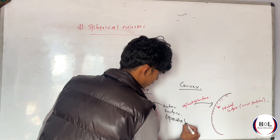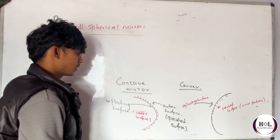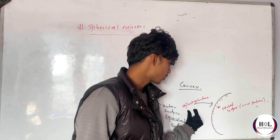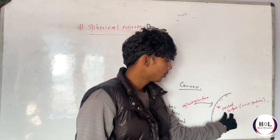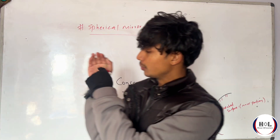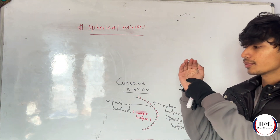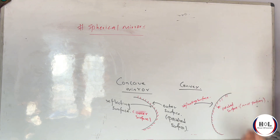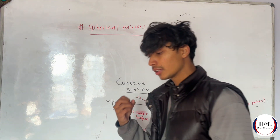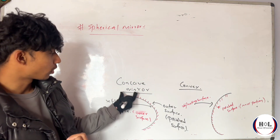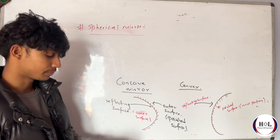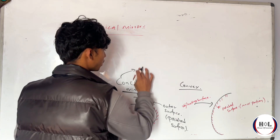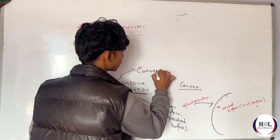Okay. This one — the outer surface is the reflecting surface, and the inner part is the concave side. A concave lens or concave mirror — look like a converging mirror.